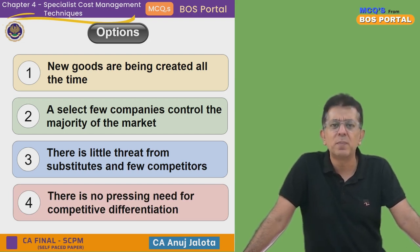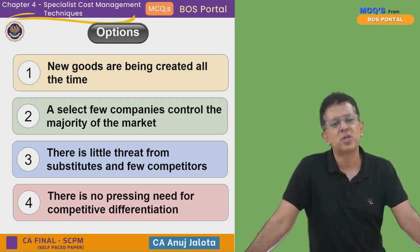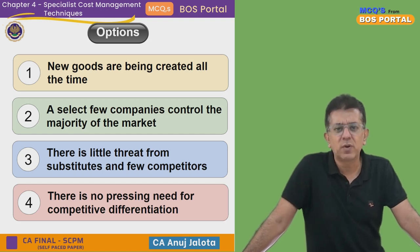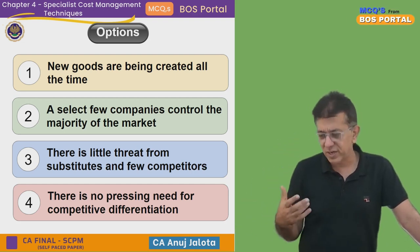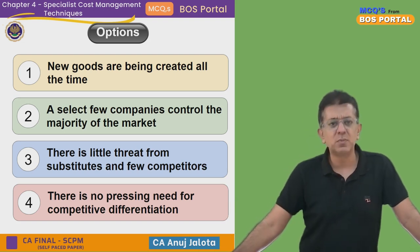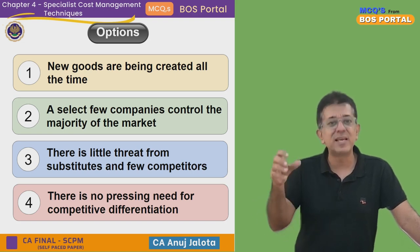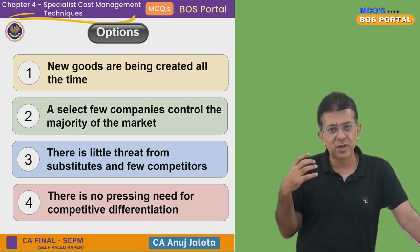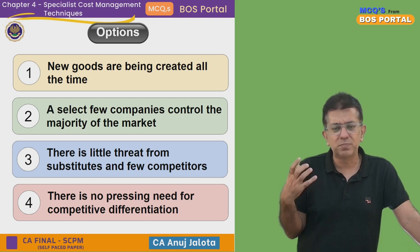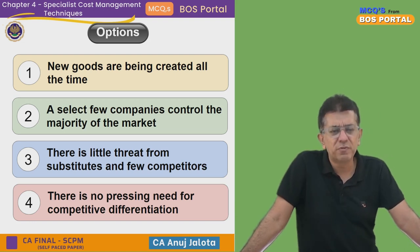Option C has some merit in that there may be few substitutes since companies make similar products, but competitors are high, so I would not regard that statement as fully correct. Option D: there is no pressing need for competitive differentiation. I think Option D makes maximum sense. The industry is growing, everybody enters wanting a share of the market, but at that time product differentiation is not required. Customers don't have many choices, and the bargaining power of the sellers is high.